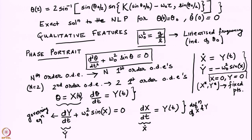X = 0, Y = 0 is a fixed point. Physically, this means that if you take a pendulum, hang it vertically downward at its equilibrium position, and do not give it any initial velocity — X = 0 is θ = 0, Y = 0 is θ-dot = 0 — the pendulum will stay there. This is just a mathematical way of stating this simple physical fact.